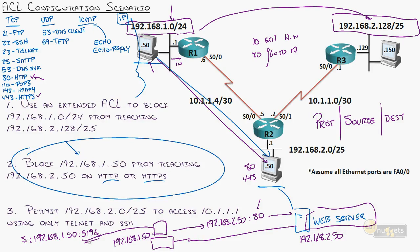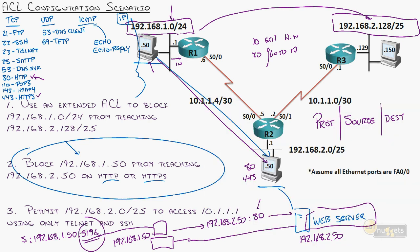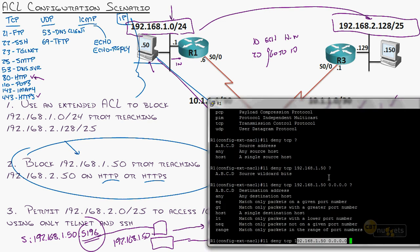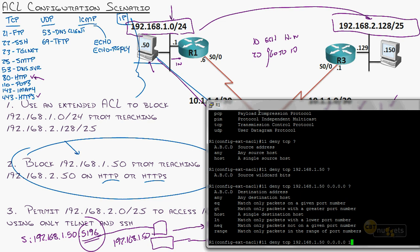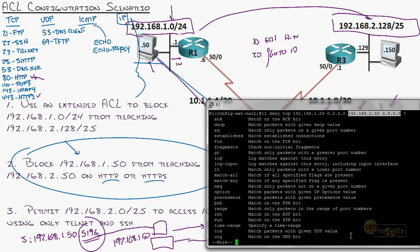For HTTPS, I just hit the up arrow and change the sequence to 12 and the port to 443. Some IOS versions handle duplicate sequence numbers differently, so it's best to specify a unique sequence number. So sequence 12, deny TCP, host 192.168.1.50 to host 192.168.2.50, equal to 443. We now have two lines — denying this source host to this destination host on destination ports 80 and 443 for both HTTP and HTTPS.